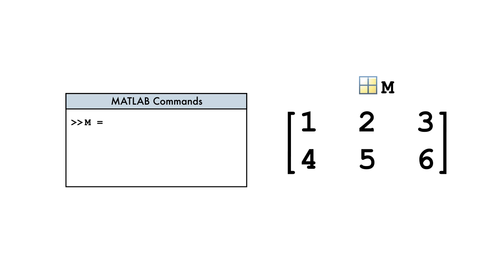Let's try creating a small matrix, M. We begin a matrix definition with a left square bracket. Just like a row vector, we separate elements in the first row of a matrix with commas.